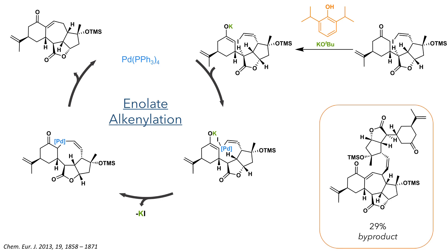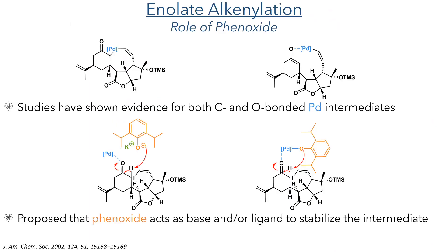In addition to this product, they also formed a dimer in a 29% yield. This is formed by the reaction of a palladium-allyl species, derived from the product, with the iodinated starting material. The phenoxide is essential to the success of this reaction, however its role is not fully understood.